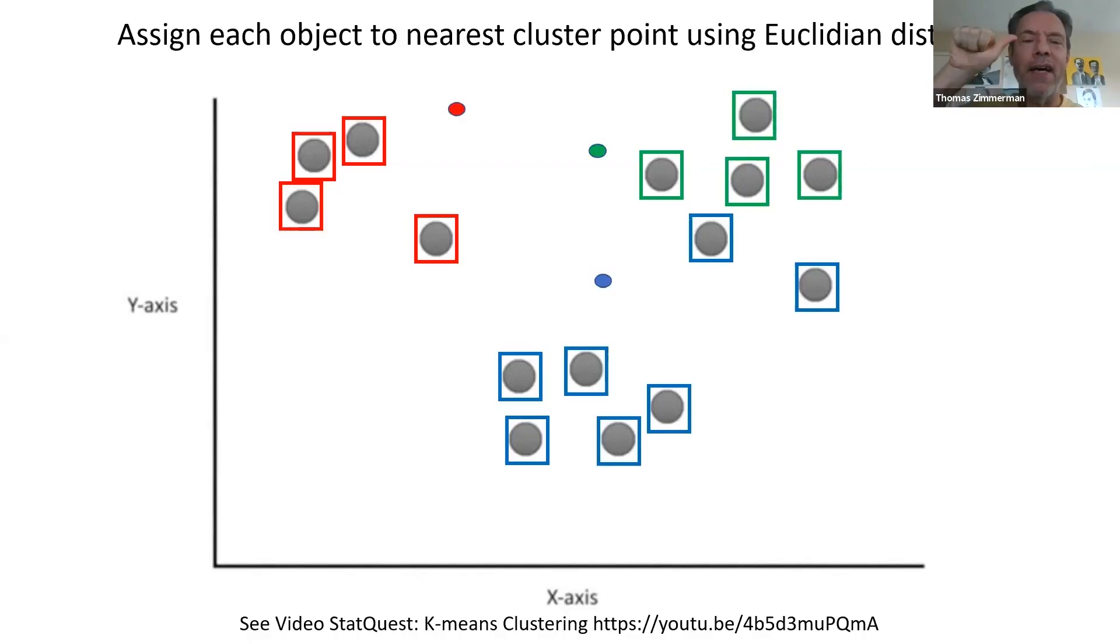Okay. Everyone with me so far? That was the, we're almost done with what's called the first iteration. So what do we do? We found out, we randomly put three points, three cluster points on our feature space. And we found out for each object, what cluster point are you closest to and assigned it to that cluster. Now, we take each cluster group, the red group, the blue group, and the green, and we figure out the centroid.